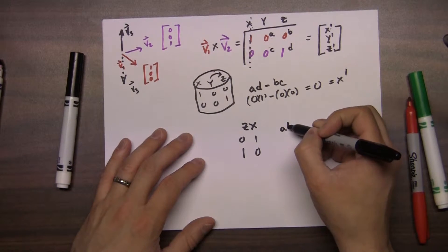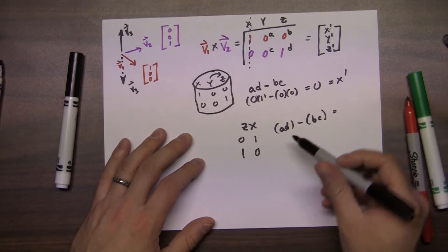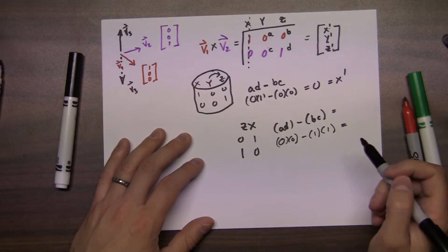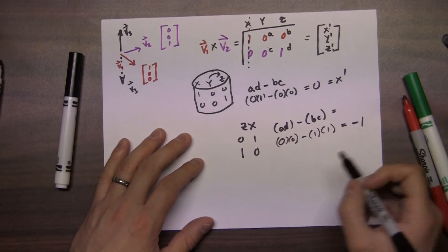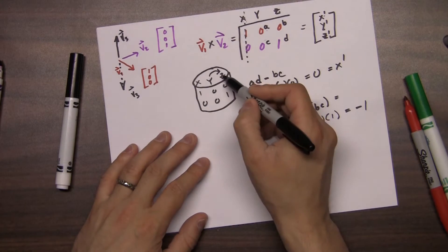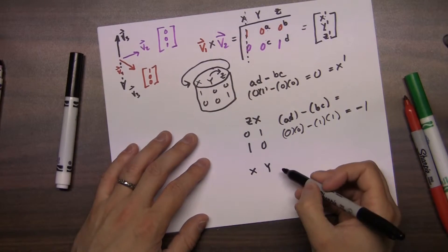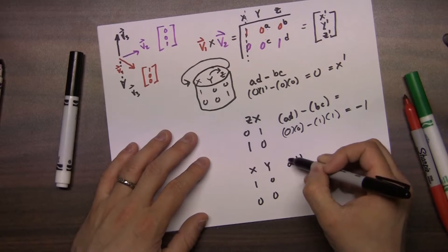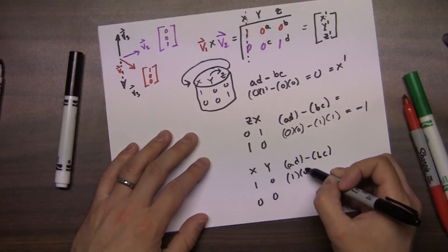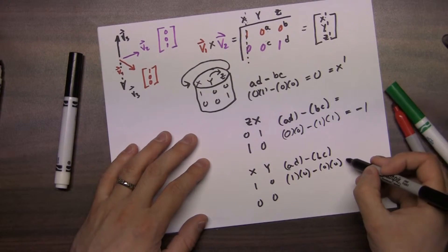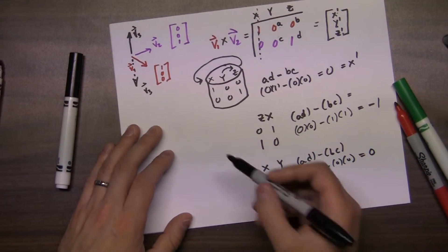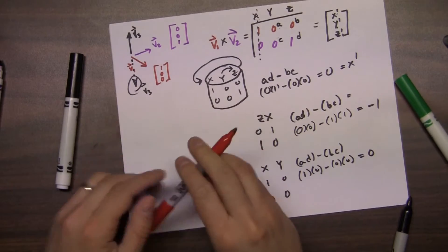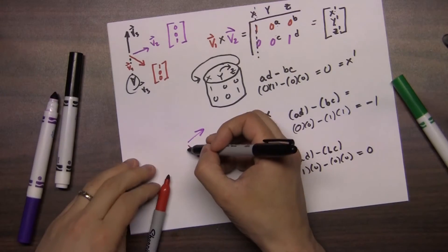Once again it's ad minus bc, which is 0 times 0 minus 1 times 1, giving us negative 1. Next up is the z term. Because we wrap back around, it's the x and y values we care about. X was 1 and 0, y was 0 and 0. Doing ad minus bc: 1 times 0 minus 0 times 0 gives us 0. So the vector we end up with is 0, negative 1, 0 — the one that points downward.